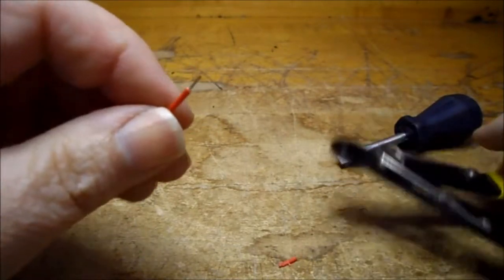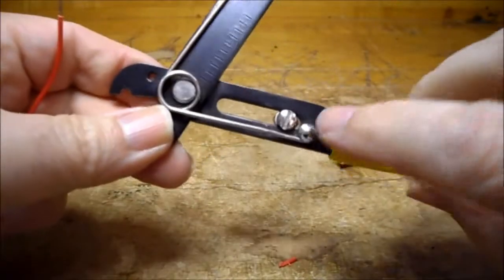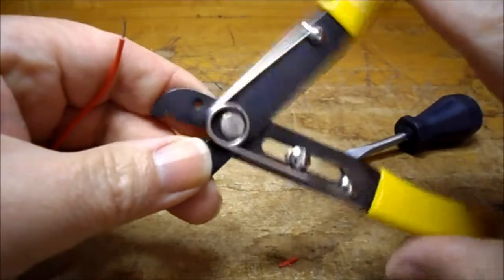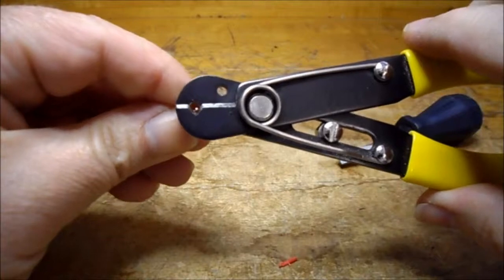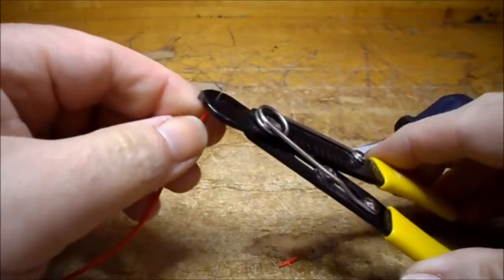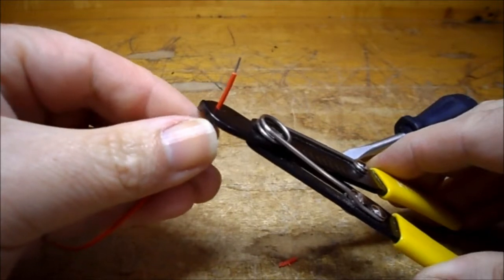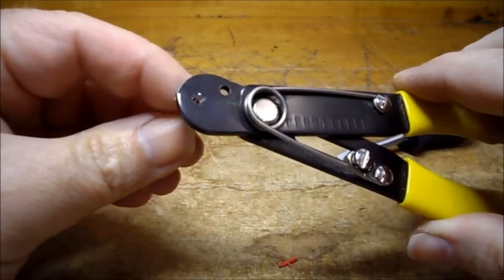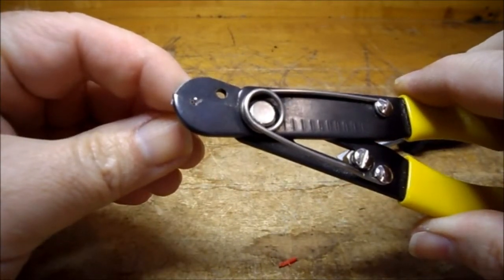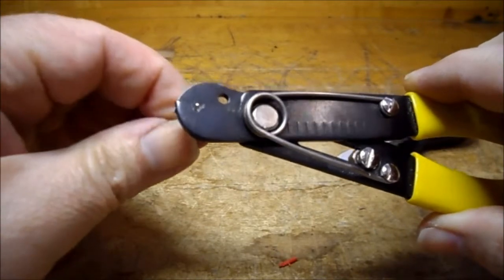And what we want to do is set up this nut and screw so that when these close the wire slides through here easily, but we don't want the wire and the insulation sliding through. We just want the wire to slide through. So just close them up until you can just feel the wire.